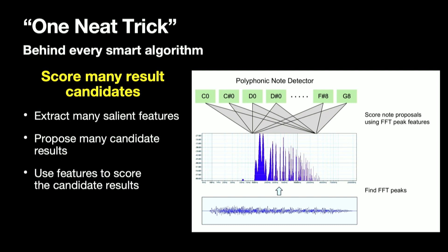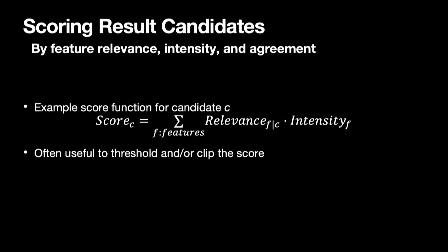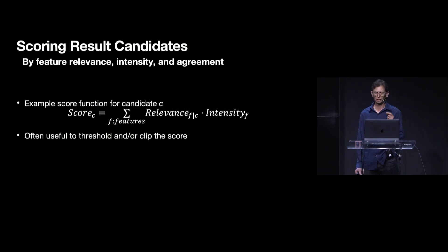I'd like to point out that machine learning models are also going to score many candidate results. A machine learning-based note detector could have the very same set of candidate notes — it will just learn to score those candidates by training from a bunch of examples. Next, I want to get into detail about how we score the candidate results. We're going to score by feature relevance, feature intensity, and feature agreement.